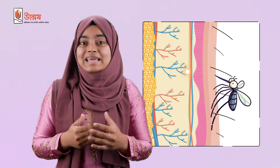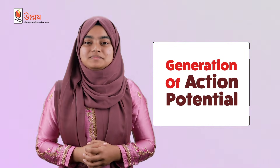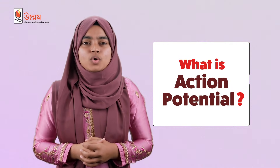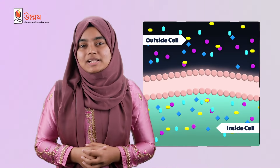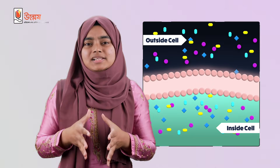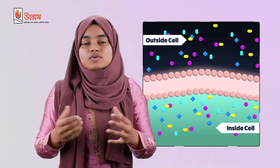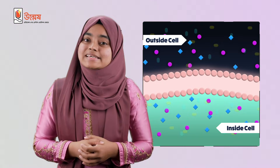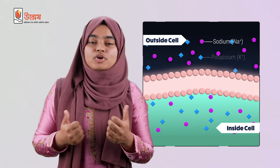When a neuron is stimulated by any stimulus like a mosquito bite, an electrical impulse is generated within the neuron. An interesting thing occurs at this time, which is the generation of action potential. To simply say, it is an electric potential generated inside a cell due to movement of certain ions through the membrane of that cell. For a neuron, these ions are sodium ion and potassium ion.